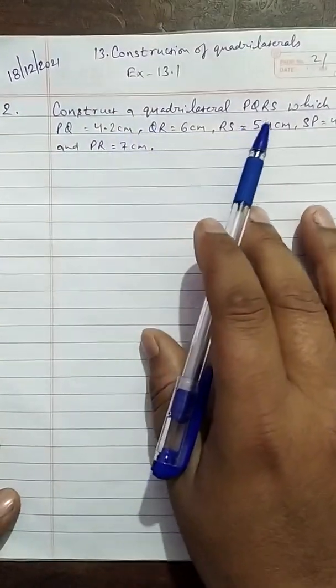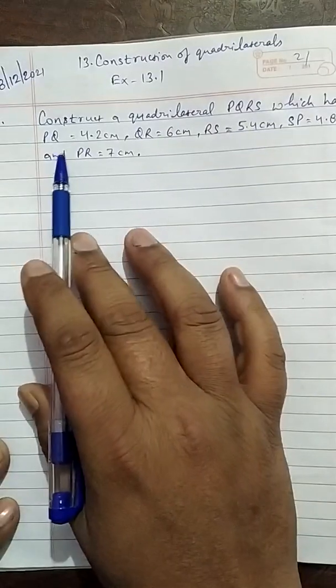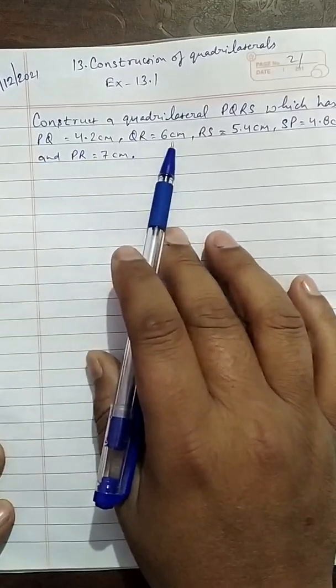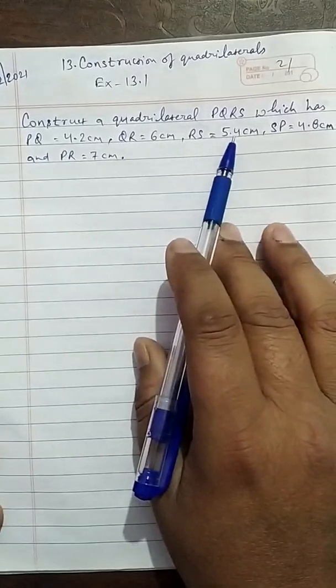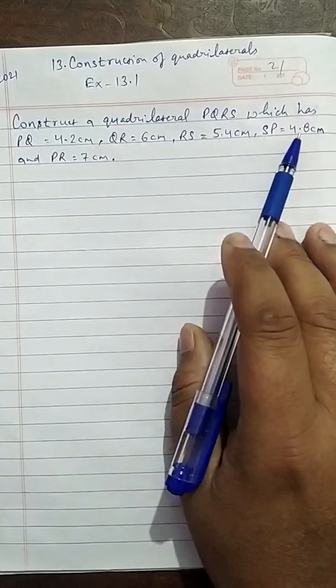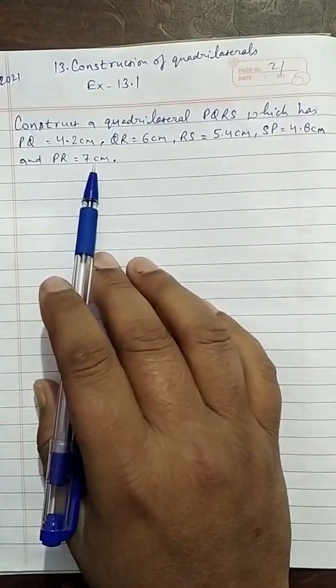Construct a quadrilateral PQRS which has PQ equals to 4.2cm, QR equals to 6cm, RS equals to 5.4cm, SP equals to 4.8cm and PR equals to 7cm.